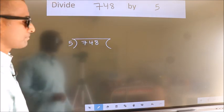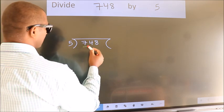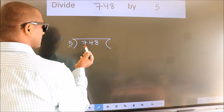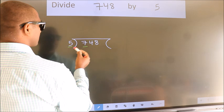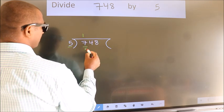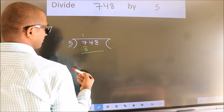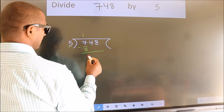Next, here we have 7, here 5. A number close to 7 in the 5 table is 5 once 5. Now we should subtract. We get 2.